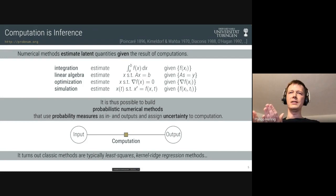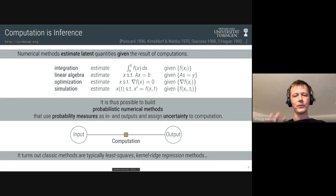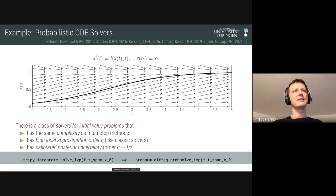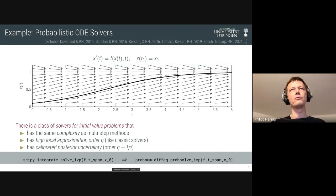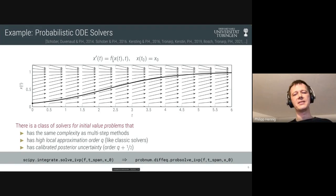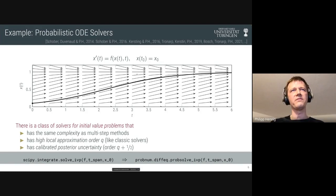What I'm going to show you now is an example of how you would do that with a dynamical system — simulation, specifically the solution of a differential equation. More precisely, the solution of an initial value problem: there is an ODE, an ordinary differential equation, where we know an unknown curve has the property that its time derivative is given by some nonlinear function depending on the curve itself, and that the curve goes through some initial point. We want to find the black line that follows the gradient of this vector field.